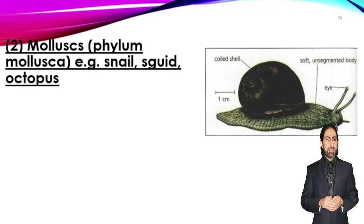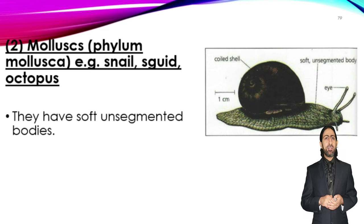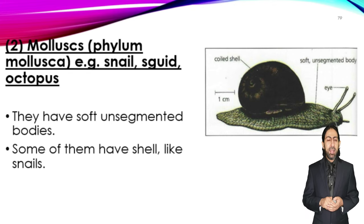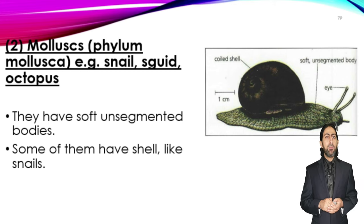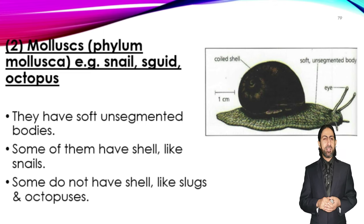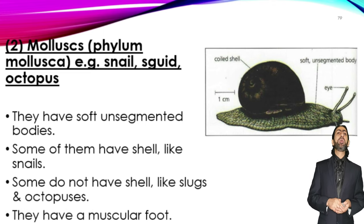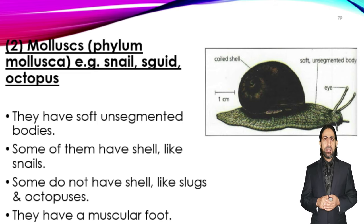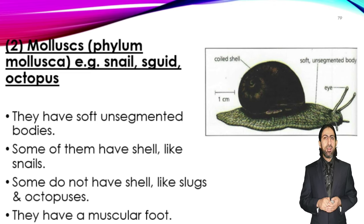Now moving to phylum Mollusca — including snails, squid, slugs, and octopus — they are characterized by a soft, unsegmented body. Some have an external shell like snails, while slugs and octopuses do not. Some have an internal shell, like squid. They have a muscular foot, as in gastropods, and strong internal muscles used for movement and opening or closing their shells.